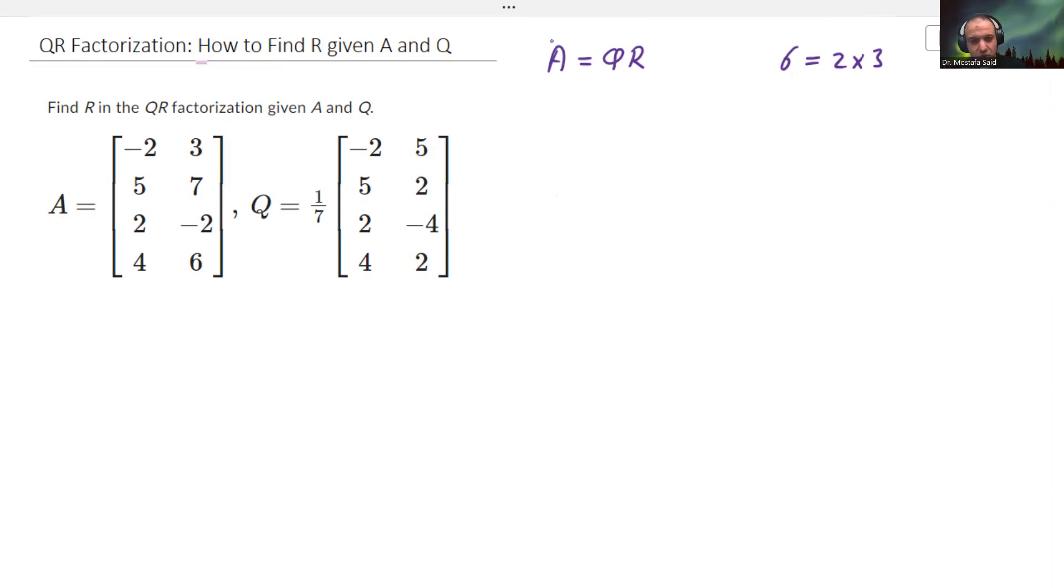This problem can be solved actually in two ways - a longer way if you don't know the properties very well, but if you know the properties very well, especially one of them, then you can solve it in a very easy and quick way and very accurately as well. So let's see what we should do. We start that A is equal to Q times R.